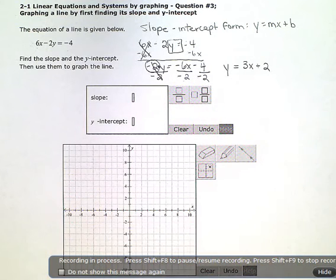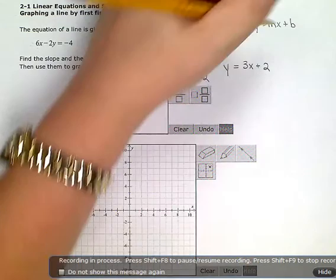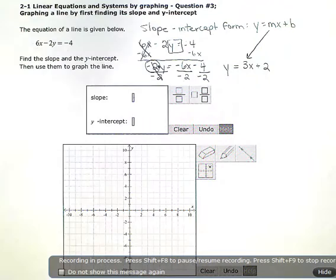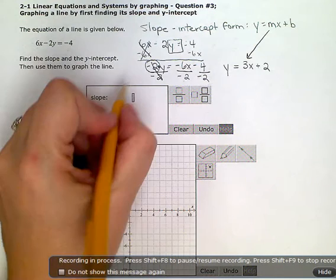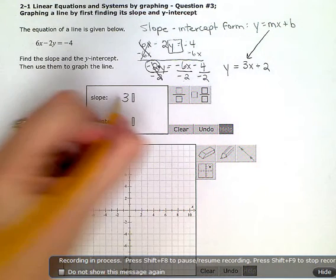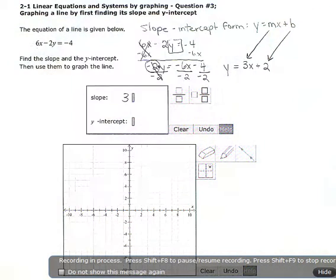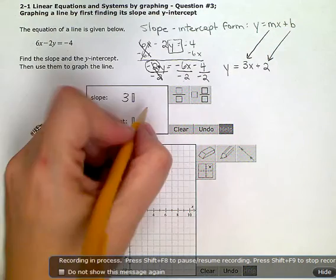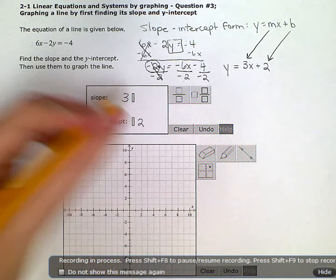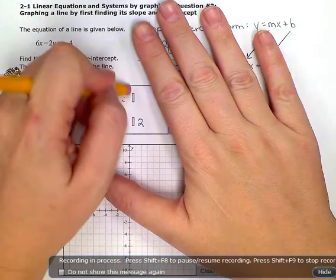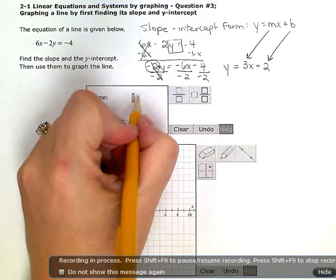Now I can see that my slope is 3, the number attached directly in front of the x, and my y-intercept is 2. So my slope is 3, my y-intercept is 2, and now I can go ahead and graph this.